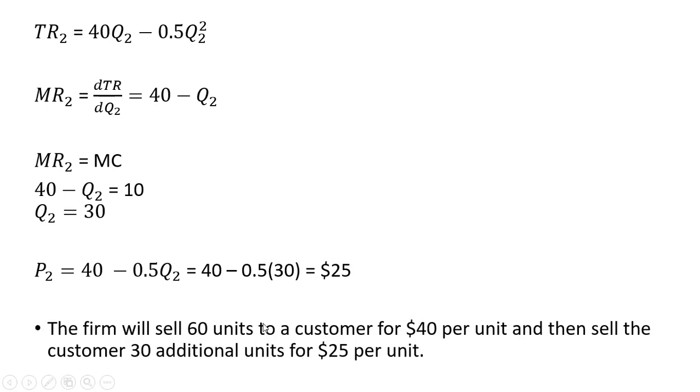And let's go ahead and sum this up then. The firm will sell 60 units to a customer at $40 per unit. We found that in part A. And then part B, we found that the firm will sell the customer 30 additional units, right here, this Q subscript 2, at a discounted price of $25 per unit.